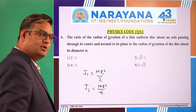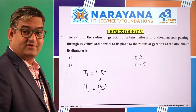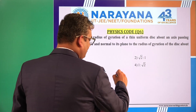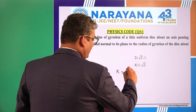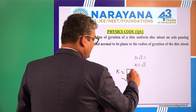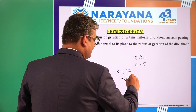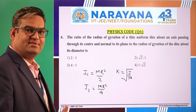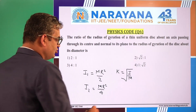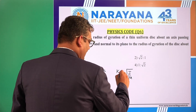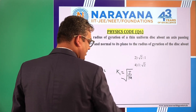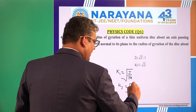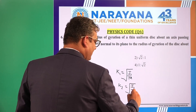Now, what is the value of radius of gyration? If we denote radius of gyration by K, then K is given by the square root of moment of inertia divided by mass. Since we are talking about the same disc, the mass is the same. So K1 equals root of I1 over M, and K2 equals root of I2 over M.